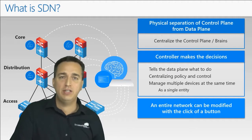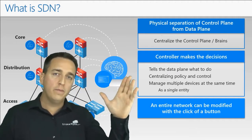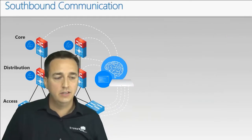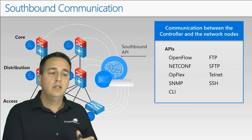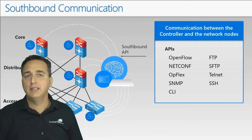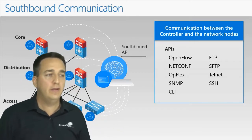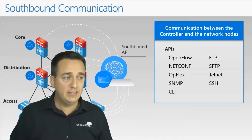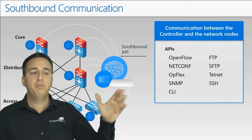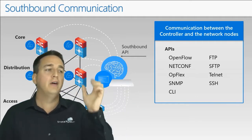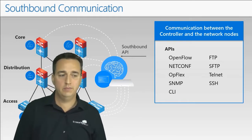So now how does communication take place? We need communication between the controller and the network devices. The communication is going to take place using what is known as southbound APIs — southbound application programming interfaces. The main objective of these is to provide communication and management between the controller and the devices themselves. It's the language they're speaking.